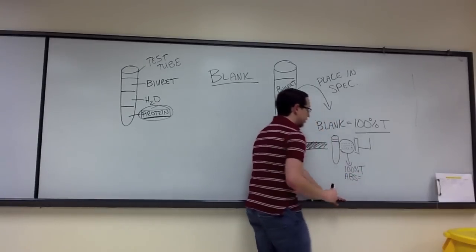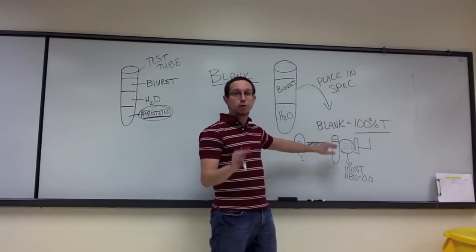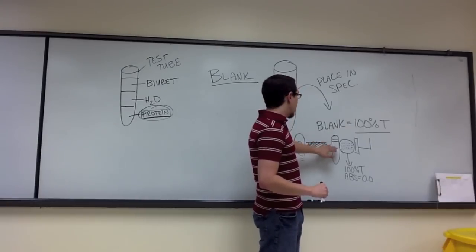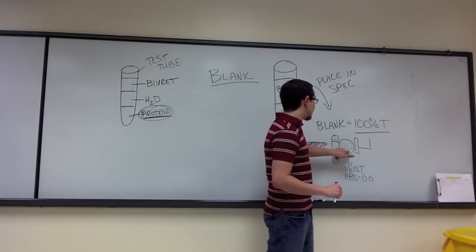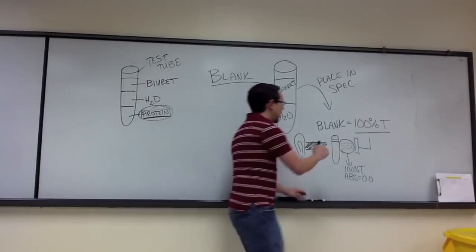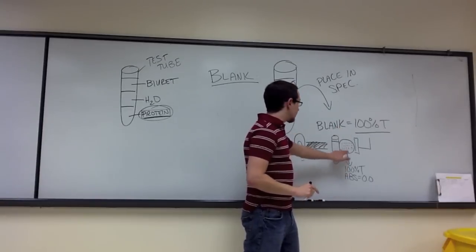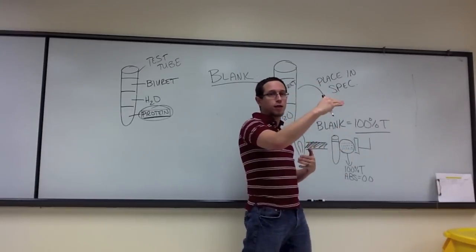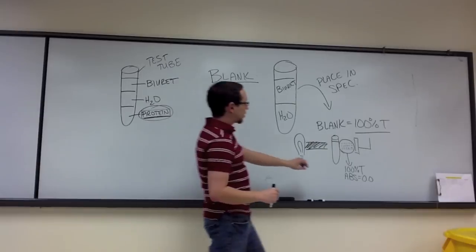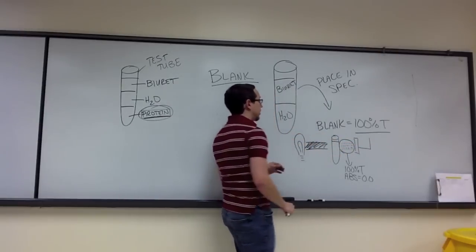If the transmittance is 100%, the absorbance should be zero. So we're effectively taring our blank sample just like we did with the weighboat. We're now saying whatever effect these components — the water, biuret, and glass test tube — have on our original beam of light, we're negating that. This amount of light passing through is now our new zero absorbance, 100% transmittance reference. When we add our protein to the mix, it will then change the amount of light absorbed and transmitted by the sample.